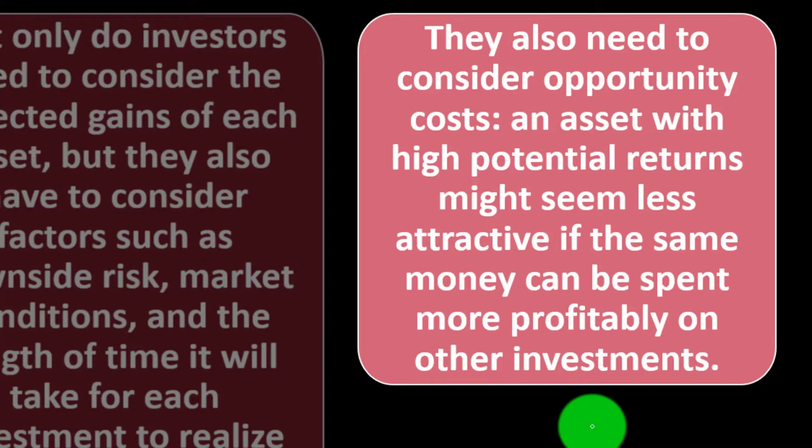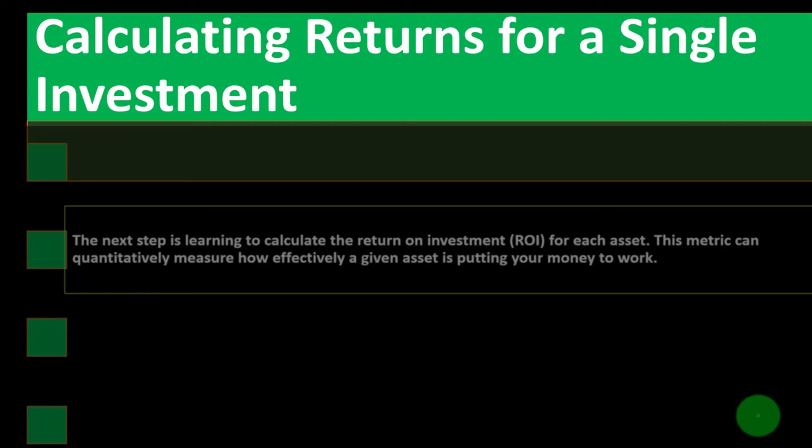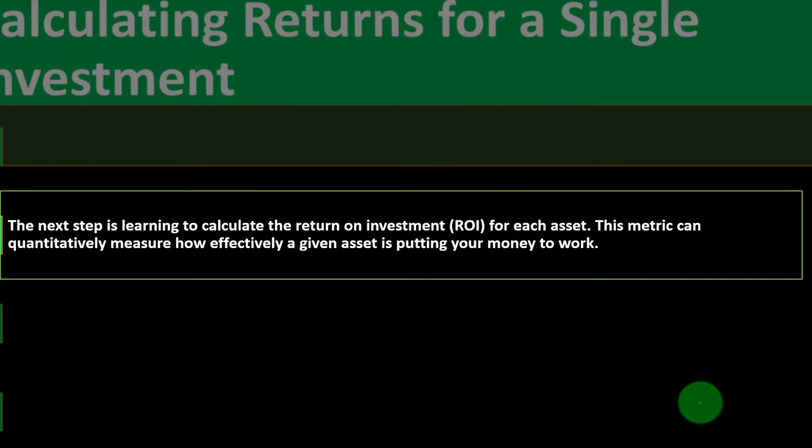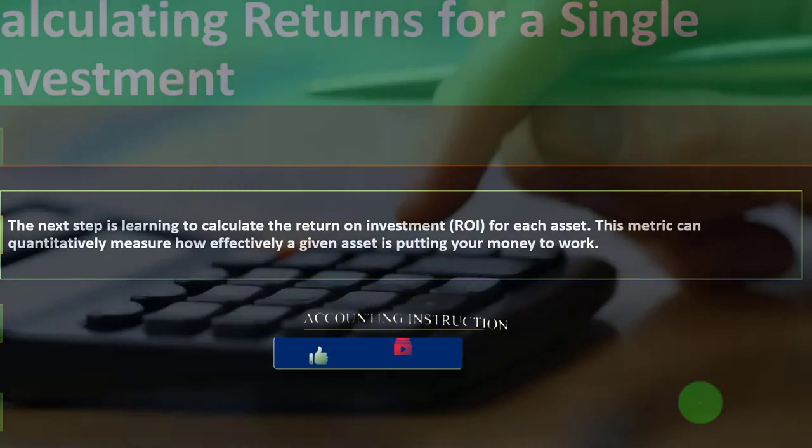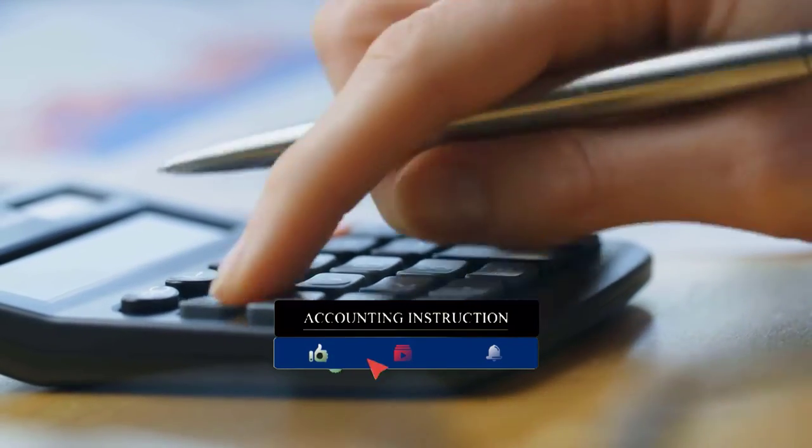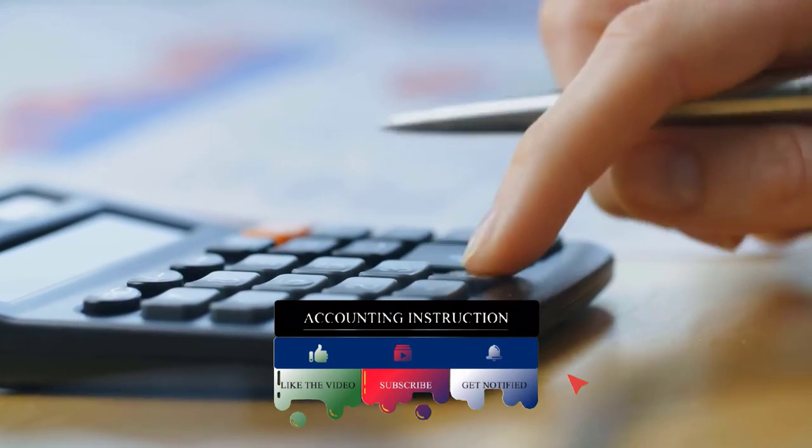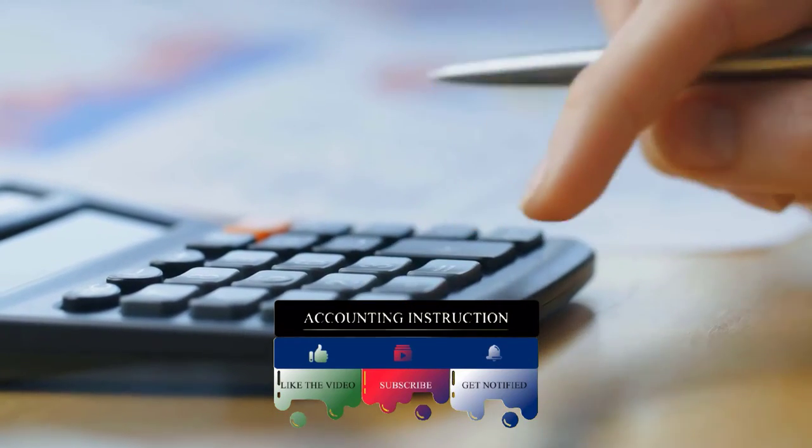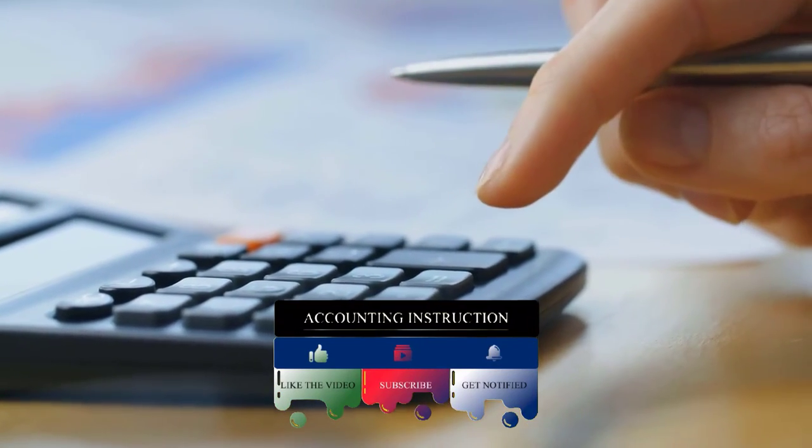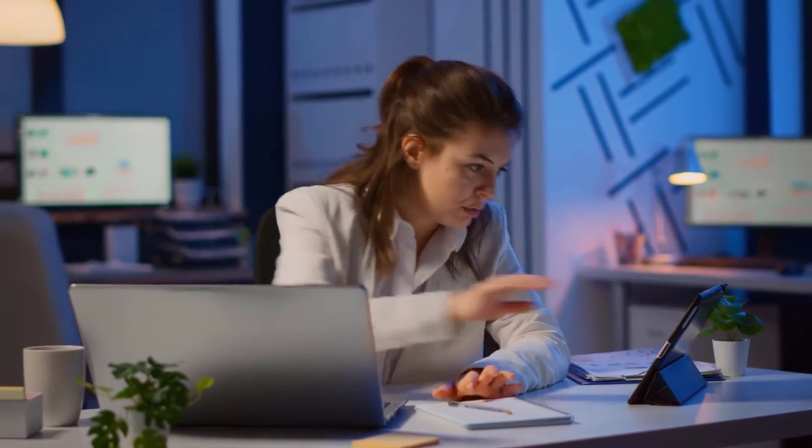An asset with high potential returns might seem less attractive if the same money can be spent more profitably on other investments. So calculating returns for a single investment, the next step is learning to calculate the return on investment, otherwise known as ROI for each asset. This metric can quantitatively measure how effectively a given asset is putting your money to work. We want to be as specific as possible and put some metrics down.